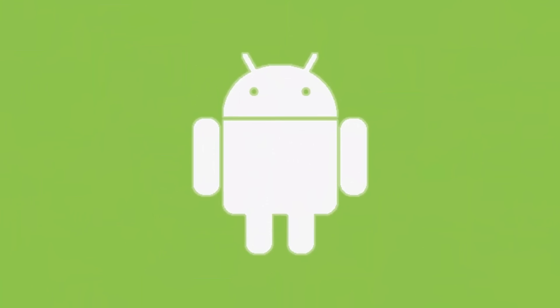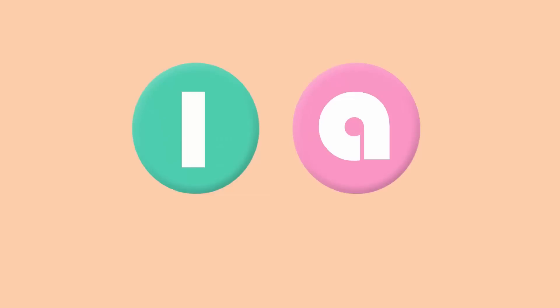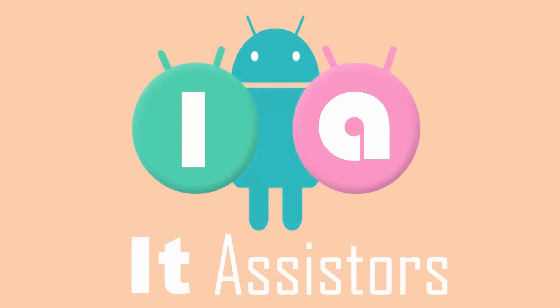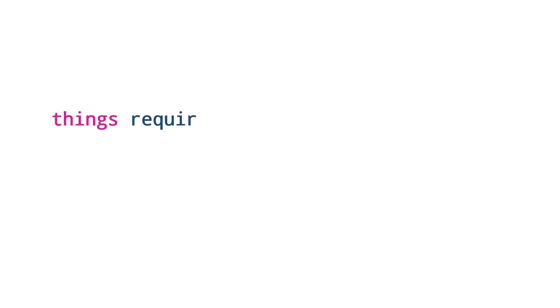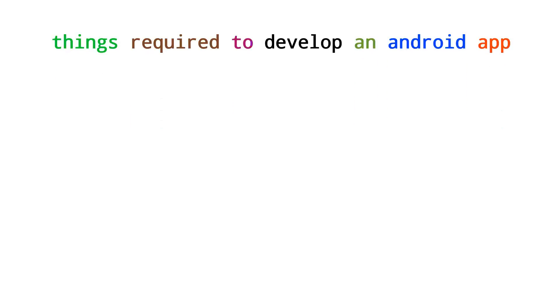Hello guys, welcome back to the second tech talk video. In this video I'm going to discuss the important stuff that deals with things required to develop an Android application. These are software packages which need to be installed on your personal computer before developing an Android application. The first thing required is JDK or Java Development Kit, the second thing is Android Studio, and the third thing is programming experience.